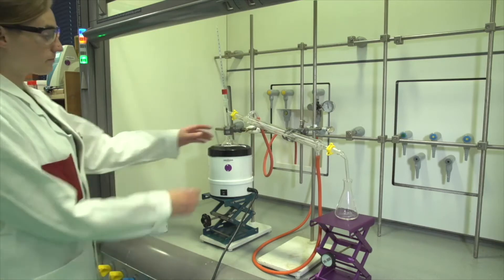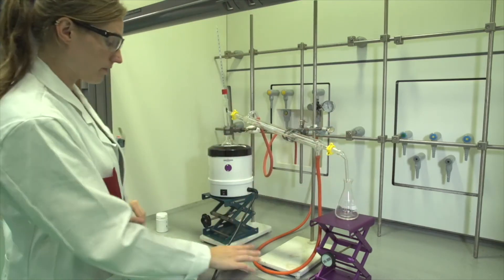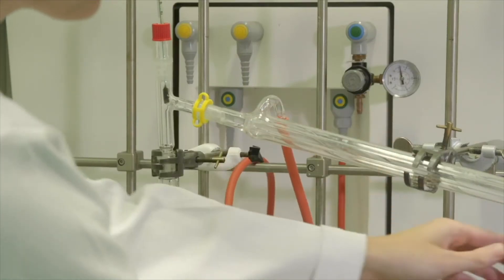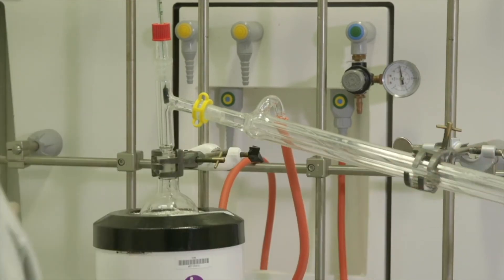Now examine the setup. When the support jack is lowered, the flask is not in contact with the heat source. This is important to remember if you want to cool the solution. In addition, make sure that your clamps are tight and that the tubing does not leak when you turn on the water.